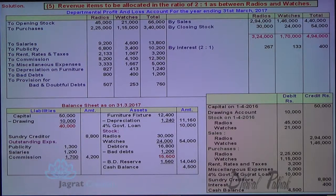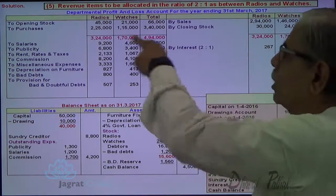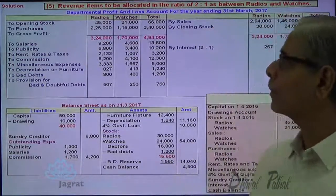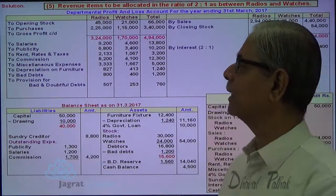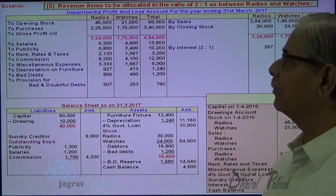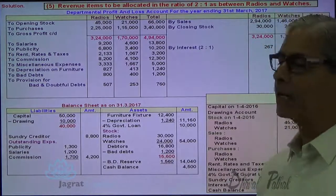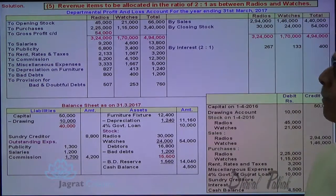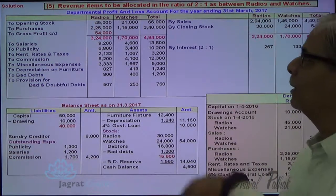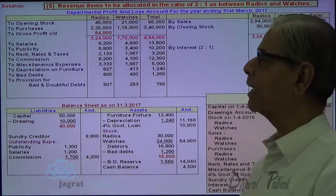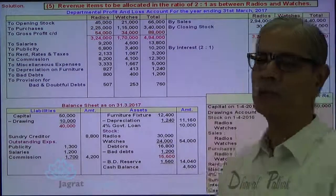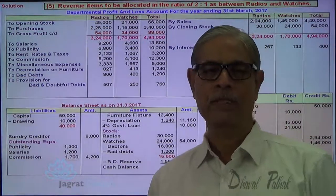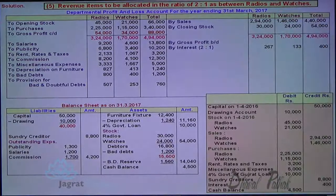Now total the credit side of the trading account and transfer this total to the debit side to find the gross profit. So 3,24,000 minus 45,000 and 2,25,000 — so 2,70,000 is to be deducted — so 54,000 is the gross profit for radio. For watches: 1,70,000 minus 21,000 and 1,15,000 — gross profit works out to be 88,000. This gross profit is transferred to the credit side of the profit and loss account.